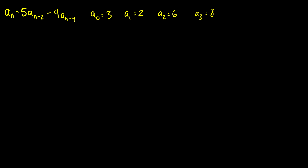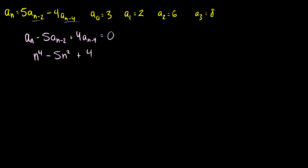So here we have a_n is equal to 5·a_{n-2} minus 4·a_{n-4}. There's going to be a lot of constants we have to find, so let's start by bringing everything over to one side: a_n minus 5·a_{n-2} plus 4·a_{n-4} equals 0. Now we can find the characteristic equation: r^4 minus 5r^2 plus 4 equals 0.